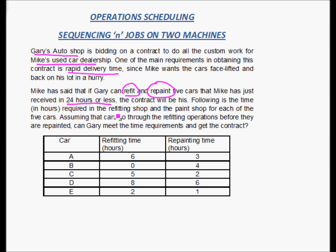The following is the time in hours required in the refitting shop and the paint shop for each of the five cars. We have been given how much time each car is going to take in the refitting shop and how much time it is going to take in the repainting shop. Assuming that the cars go through the refitting operations before they are repainted — can Gary meet the time requirements and get the contract?